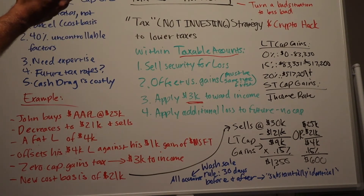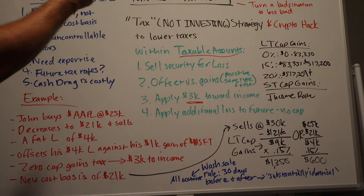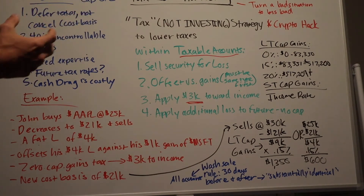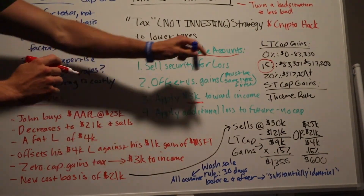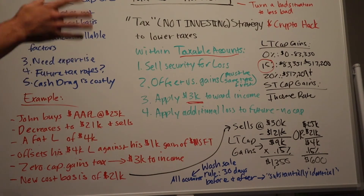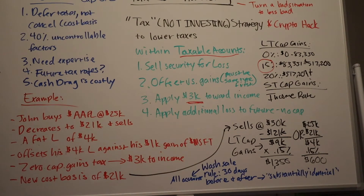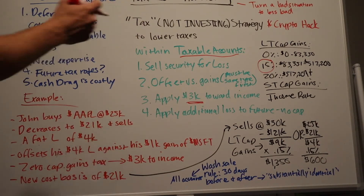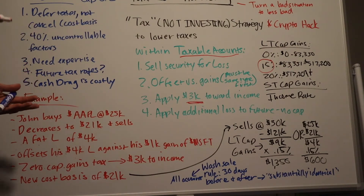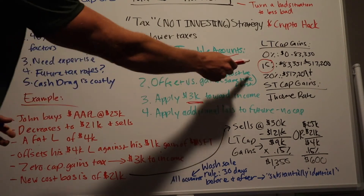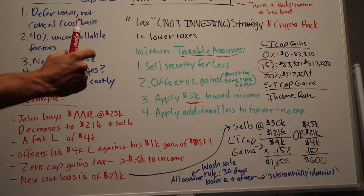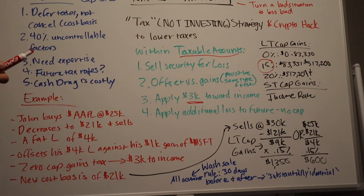From an income standpoint for long-term capital gains — for married filing jointly — $0 to $83,000 is taxed at 0%, approximately $83,000 to $517,000 is taxed at 15%, and the top earners pay 20%. Most people fall at 15%. For short-term capital gains, it's taxed at your ordinary income rate. If you're taxed at 32% or even 24%, holding an investment long-term gives you a significant tax advantage — a 9% difference between 24% and 15% is substantial.